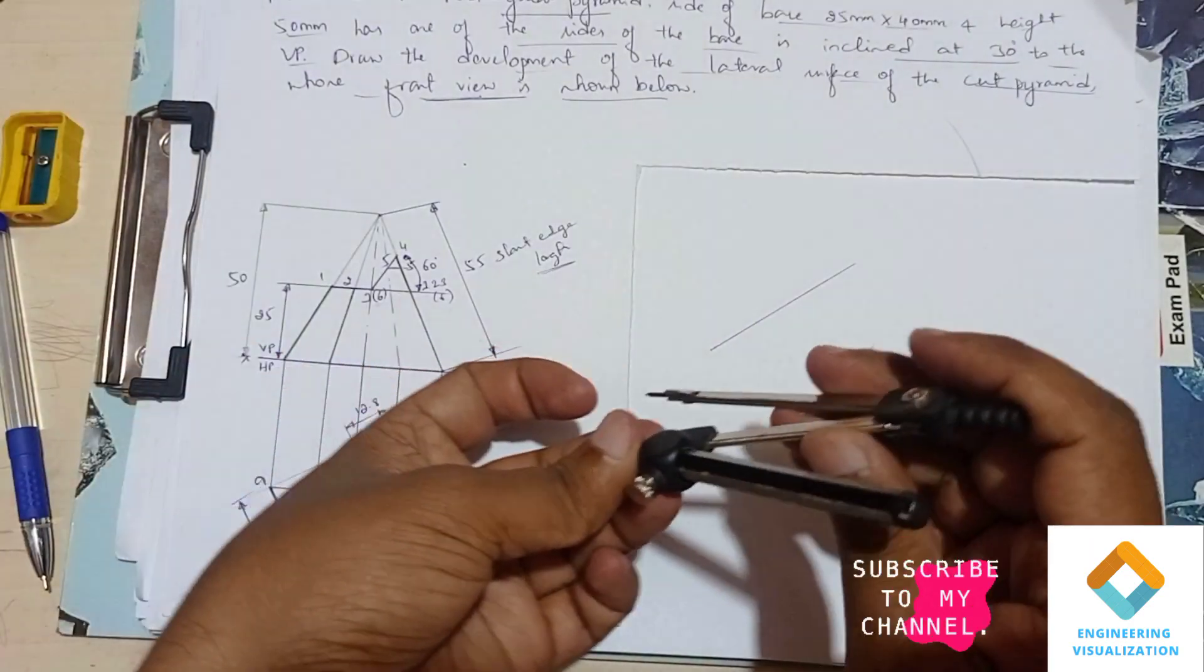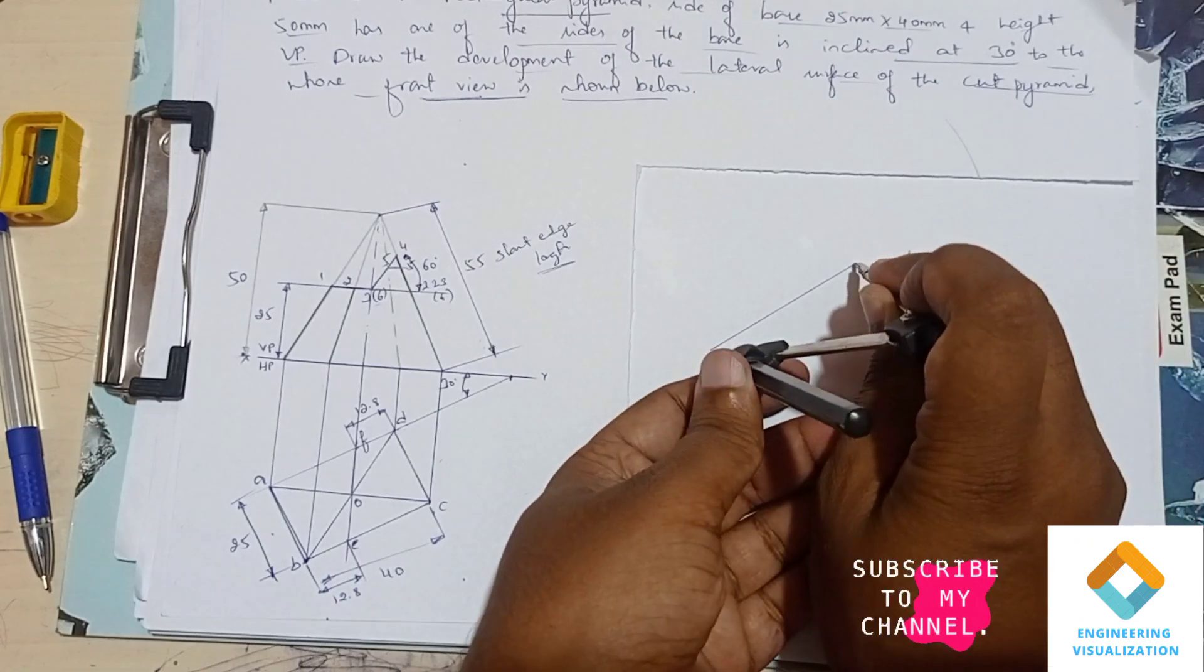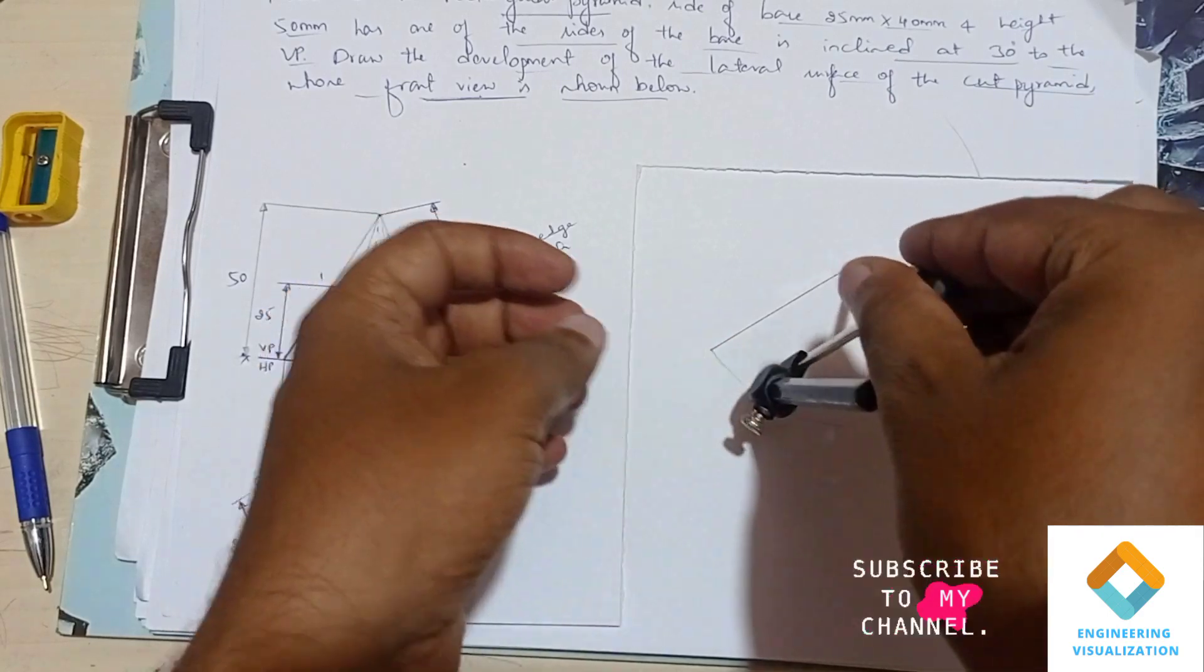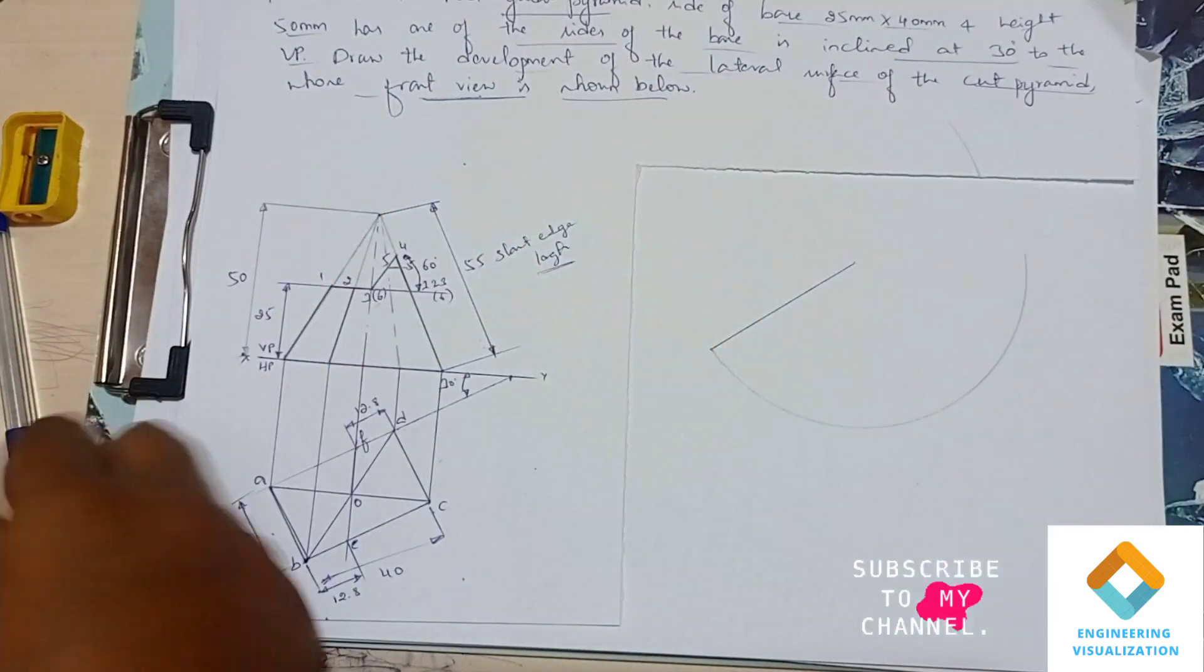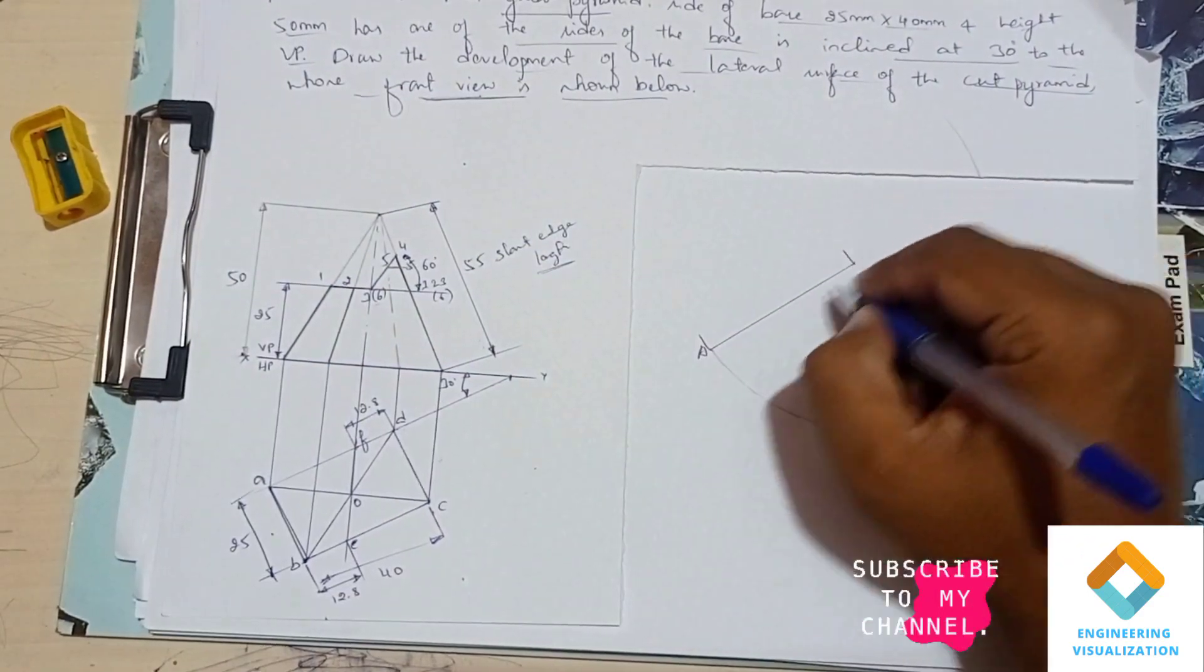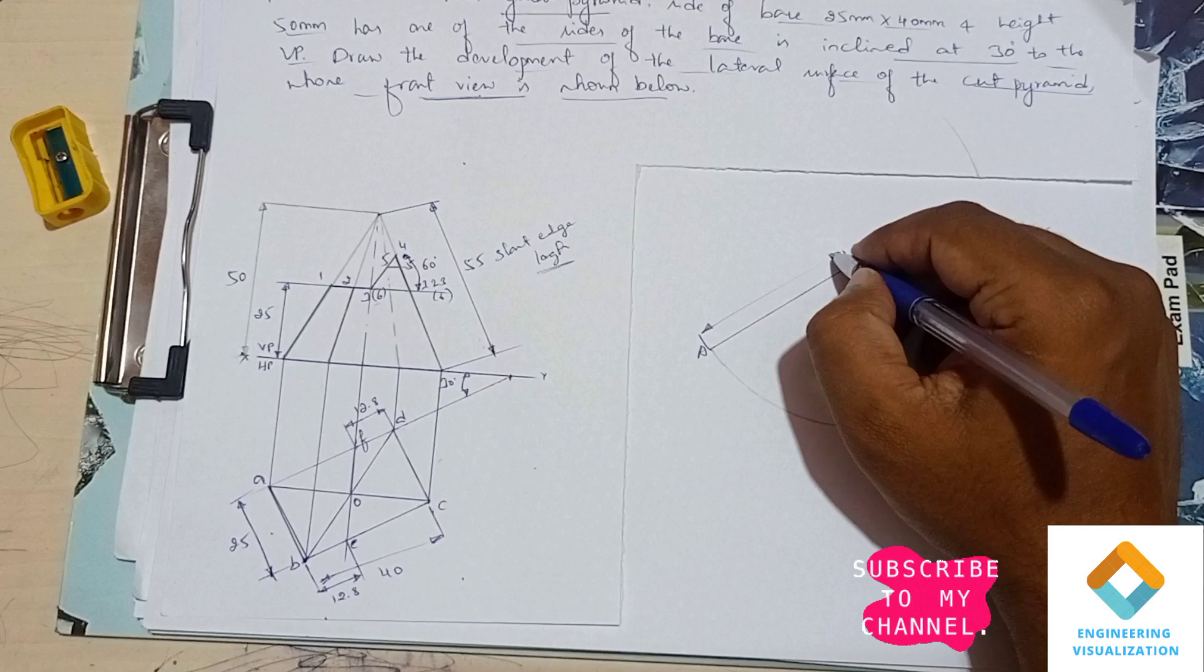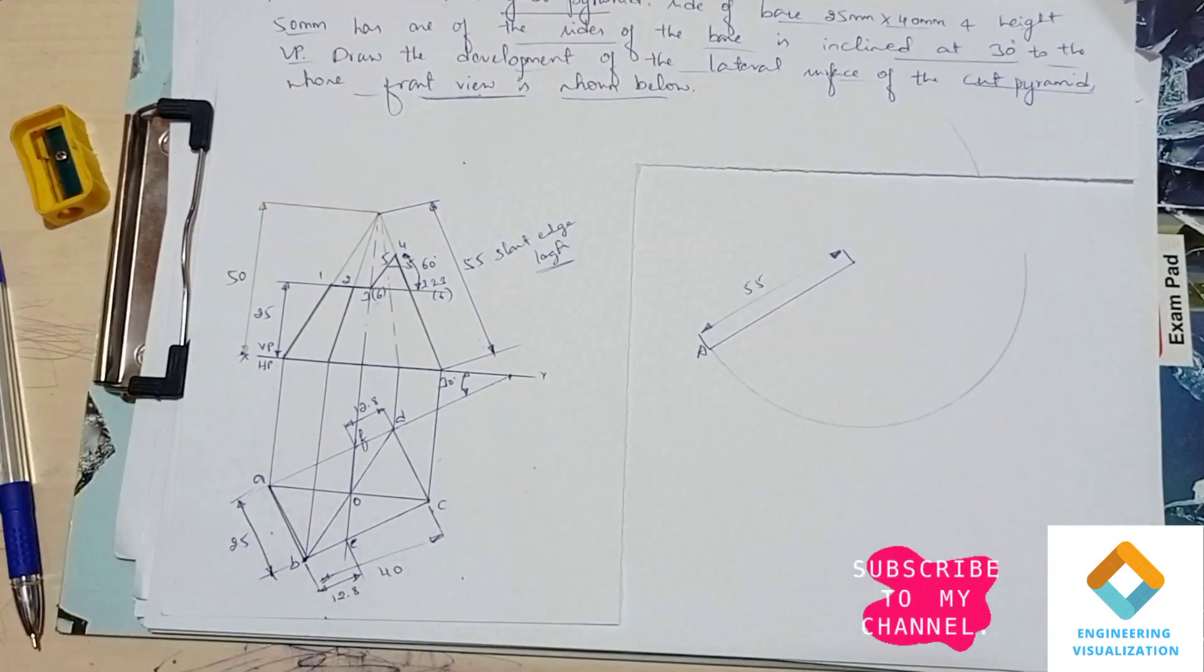So, slanted length of 55mm. After drawing the slanted length, measure the same length using compass and draw an arc. Now we have to show the dimensions for this length, so it is having a length of 55 slanted length.